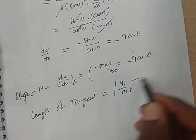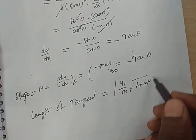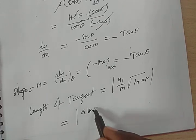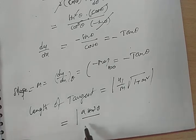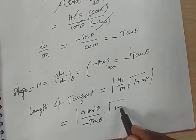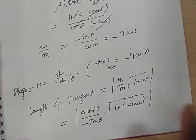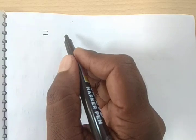Next, find the length of tangent. The formula for length of tangent is |y₁/m| · √(1 + m²), which can also be written as |y₁| · √(1 + (1/m²)).